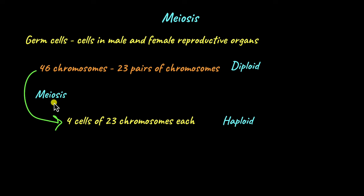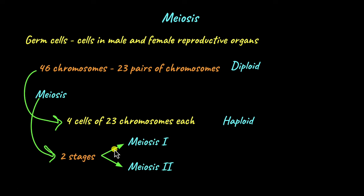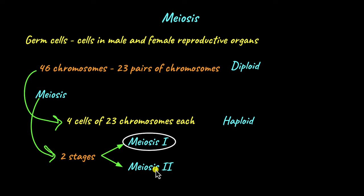Now because meiosis is such a complicated process, it is split into 2 stages: meiosis 1 and meiosis 2. In this video, we are going to talk about meiosis 1. We will tackle meiosis 2 in a different video.